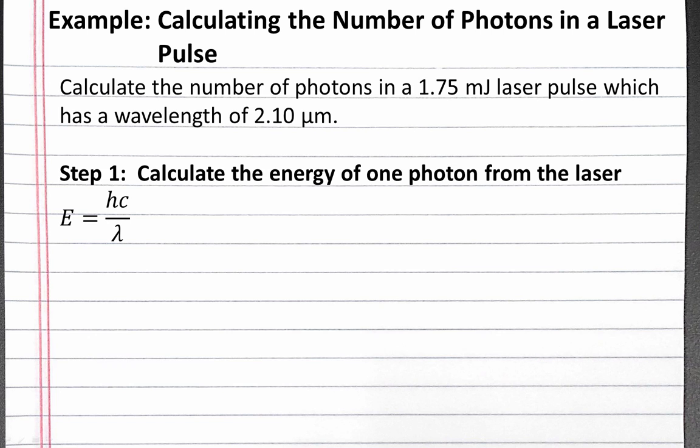To calculate the energy of one photon, we use the equation E equals hc over lambda, where h is Planck's constant, c is the speed of light, and lambda is our wavelength in meters.